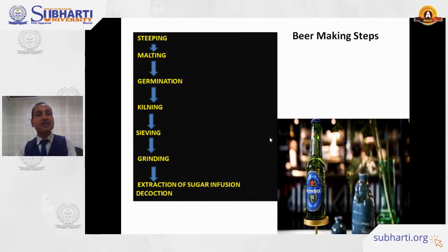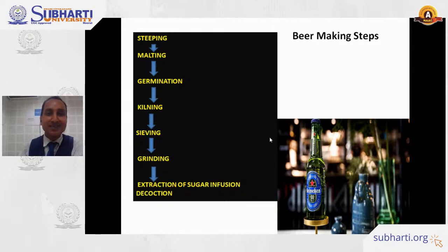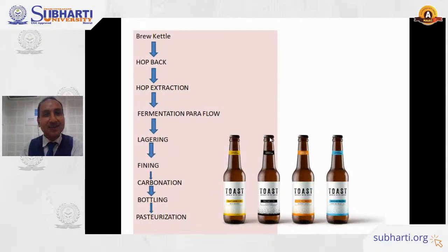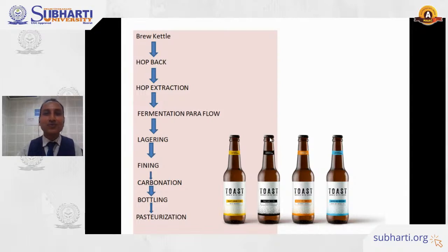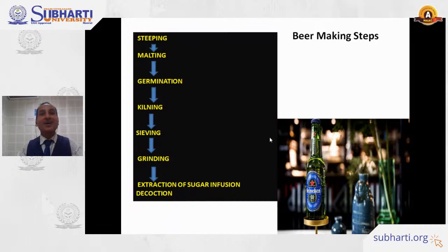The steps for making beer are: steeping, malting, germination, kilning, sieving, grinding, extraction of sugar by infusion or decoction, the brew kettle, hop back, hop extraction, fermentation, paraflow, maturation, fining, carbonation, bottling, and pasteurization. We will understand each step in detail.